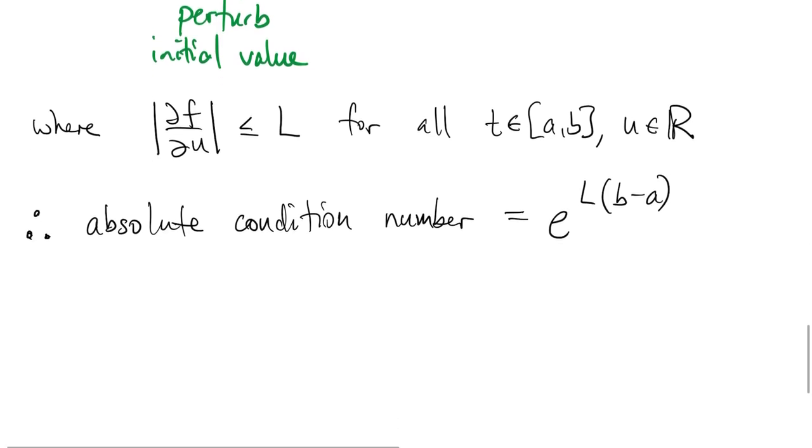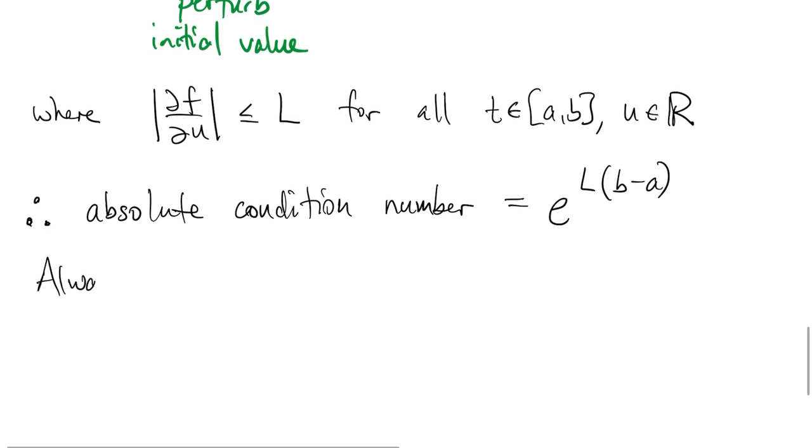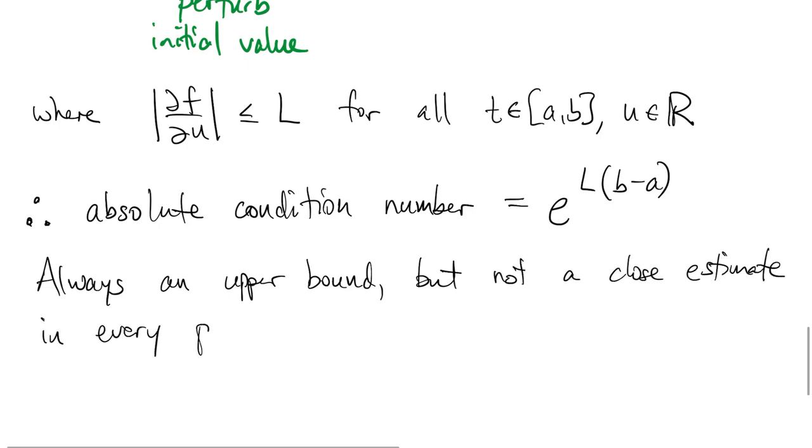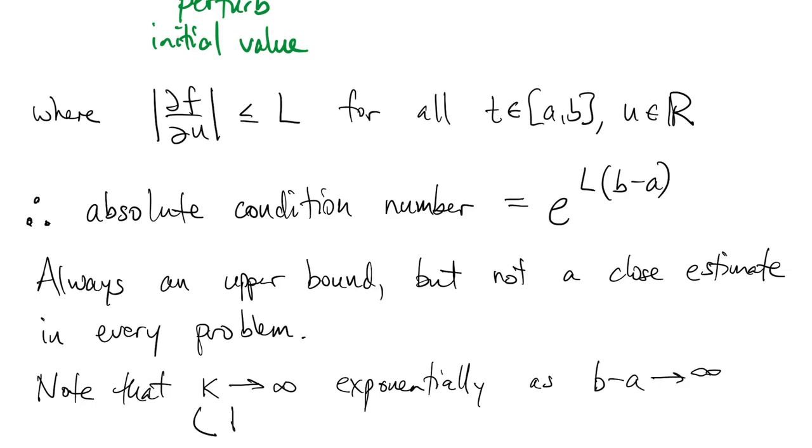However, while this is always a valid upper bound, it can be wildly pessimistic. That is, the actual response to perturbation can be far smaller depending on what specific problem you have. Another thing to note is that the condition number grows exponentially with the length of the time domain. This is essentially what is meant by the butterfly effect, in which the effect of a tiny change can be magnified tremendously as time goes on. The upshot is that getting accurate results for solving IVPs on very long time intervals is no joke.